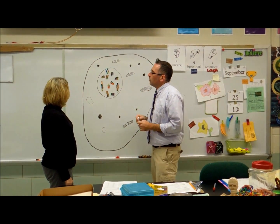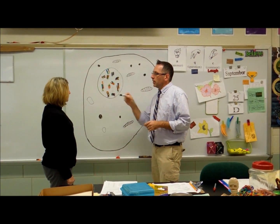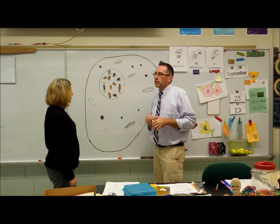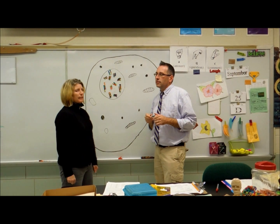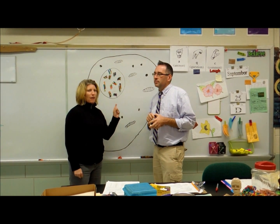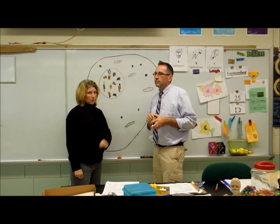Now, if a toad had 22 chromosomes in its body cell, how many would it have in its sex cells? Sex cells have half the number, so there would be 11 chromosomes.